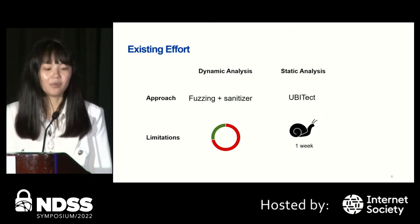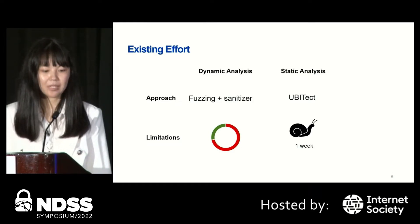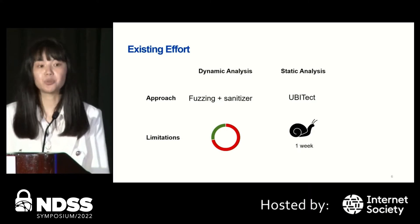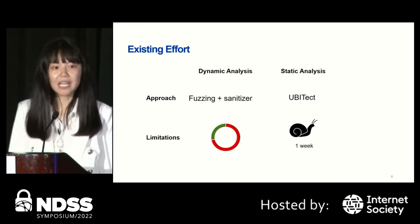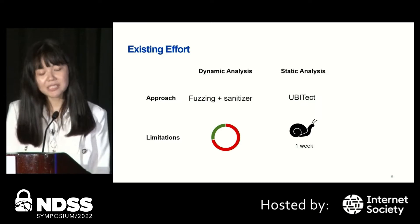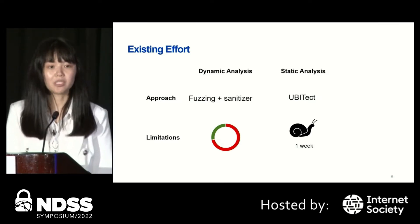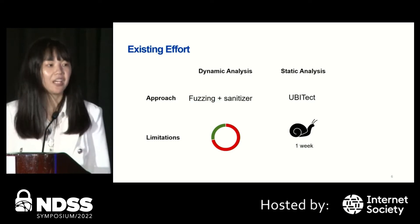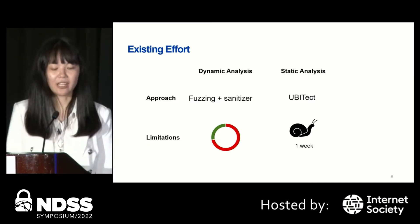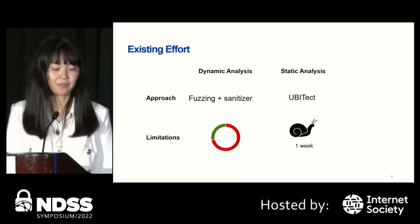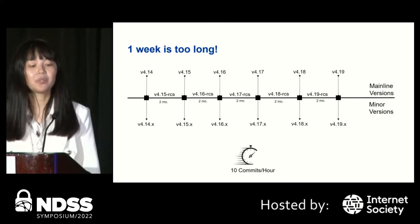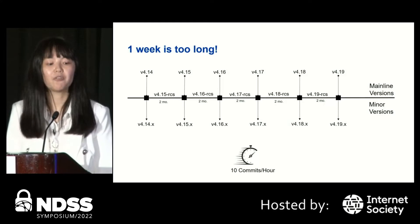Second, we have static analysis. Our group developed a tool called UBTect — I'm the first author of this tool. UBTect is a precise and scalable approach which can detect use-before-initialization bugs in the Linux kernel. It takes one week to finish analyzing the whole kernel.